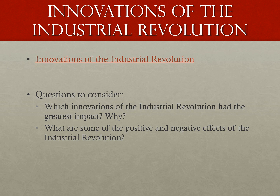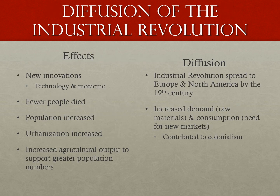The one invention we absolutely must know from the Industrial Revolution is the steam engine. Make sure you note it as a major industrial invention. The steam engine provided a better source of power and allowed factories to move away from water-powered areas. Combined with the invention of railroads — also driven by steam engines — it lowered the cost of transporting bulky and heavy goods, so companies could move manufacturing plants away from coal and iron ore deposits into big cities like London and Paris.